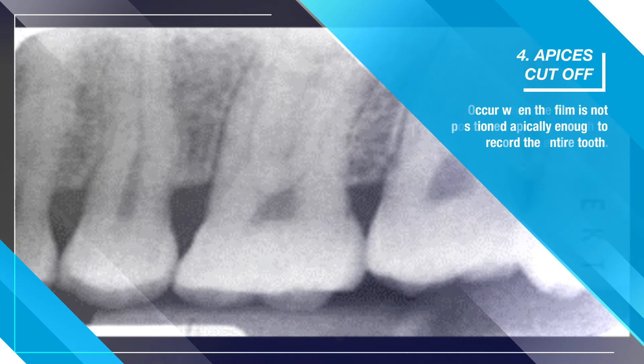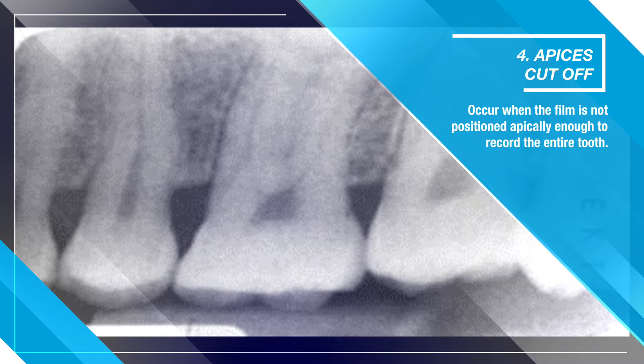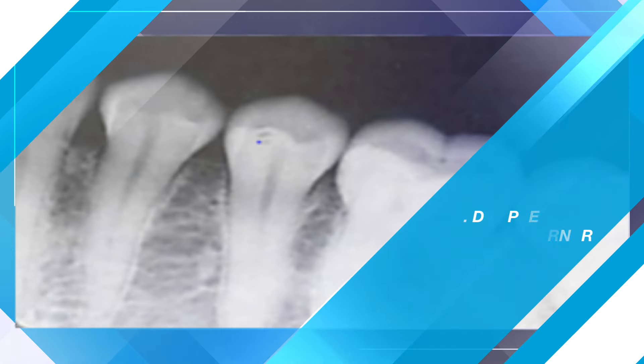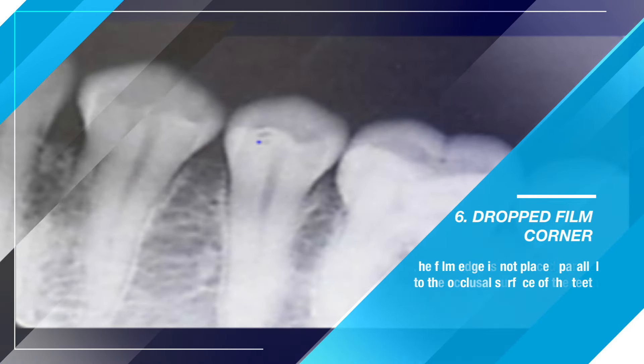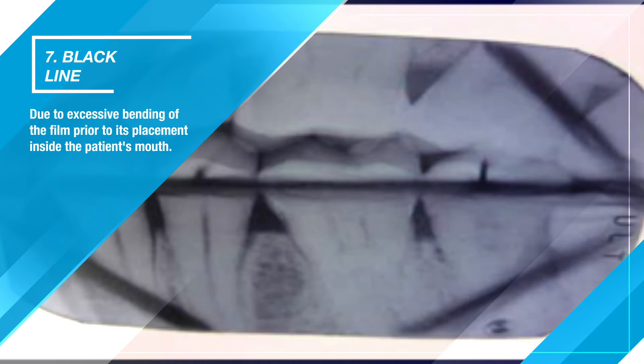Four — apices cut off. This occurs when the film is not positioned apically enough to record the entire tooth. Five — crown not shown. There is not enough film extending occlusally. Six — dropped film corner. The film edge is not placed parallel to the occlusal surface of the teeth.